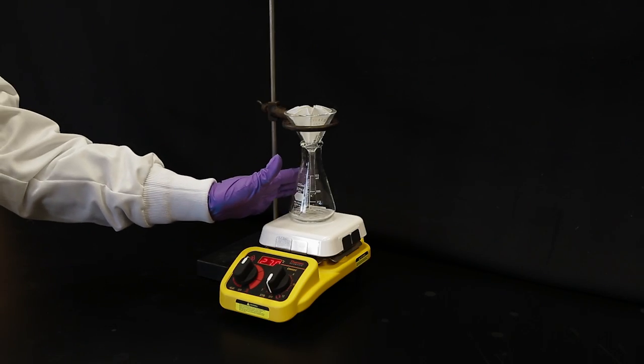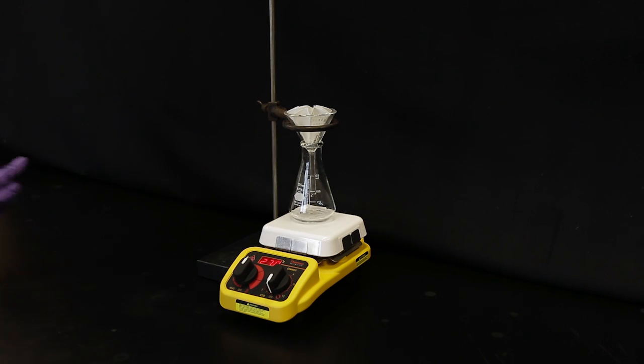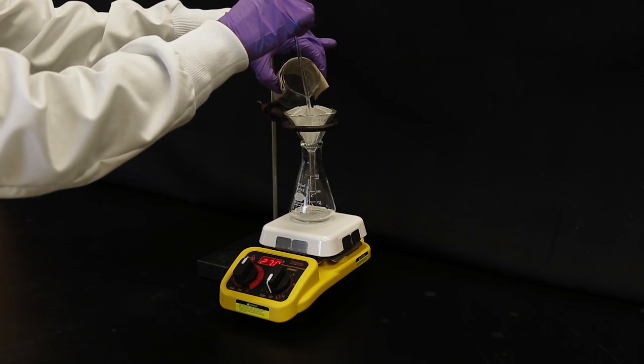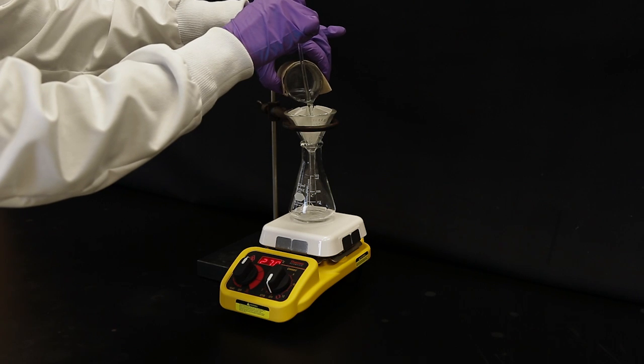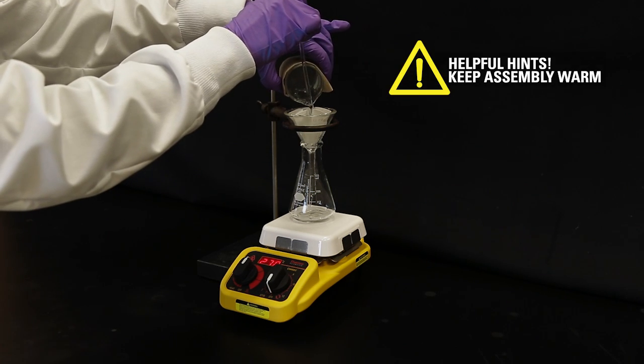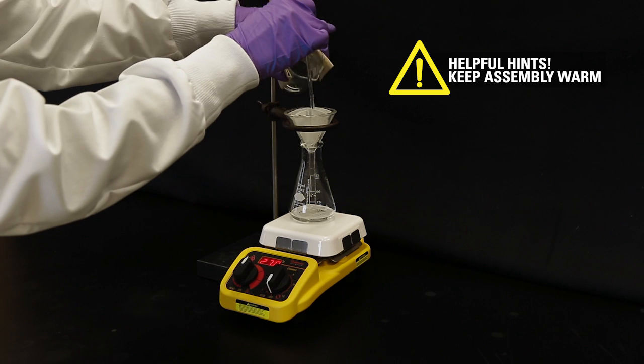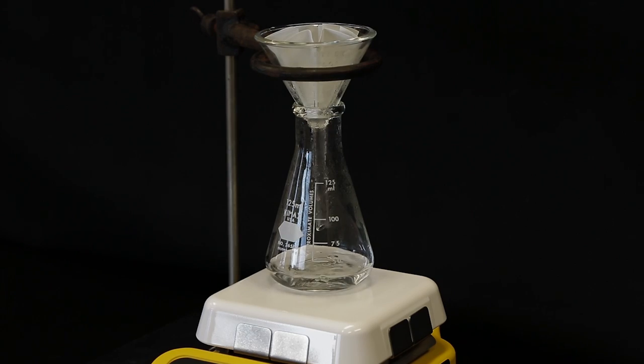When the assembly is warm to the touch, pour the beaker of solution over the pleated filter paper and let it drip into the warm Erlenmeyer flask. By keeping the assembly warm, you will avoid the loss of any material due to early crystallization.